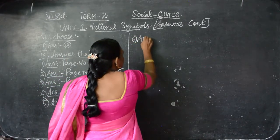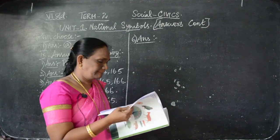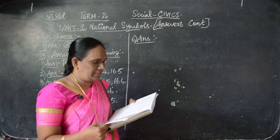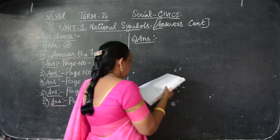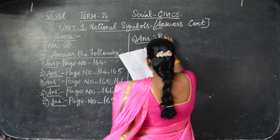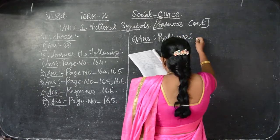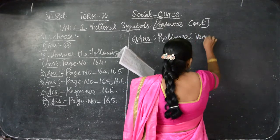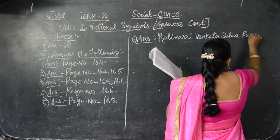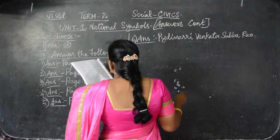Sixth question: Who wrote the national pledge? Strike out 'who' and write the answer. The national pledge was written by Vengata Subhaya Rao. Write the name: Vengata Subhaya Rao wrote the national pledge.